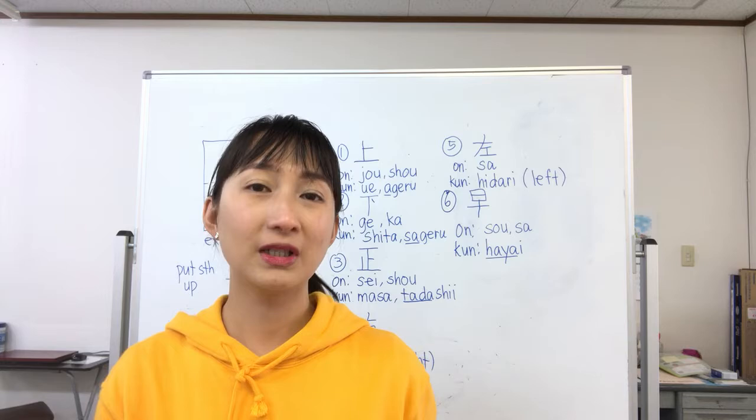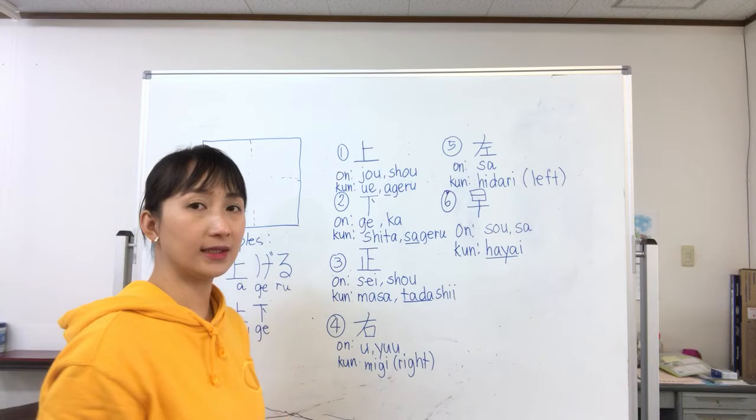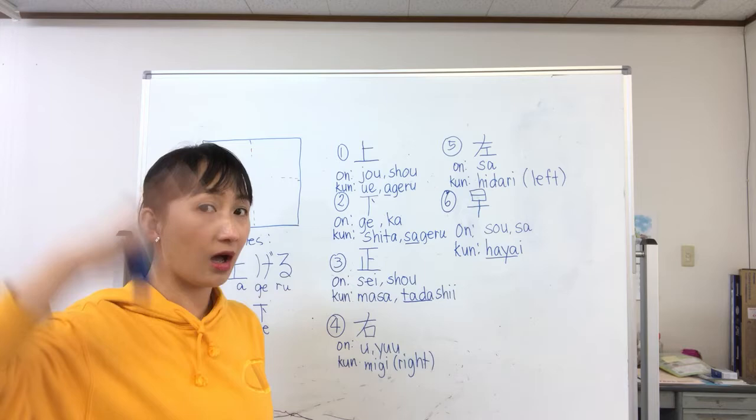Let's start off with this kanji. Its onyomi are jo and shou, and its kunyomi are uwe and agiru. So uwe means up or above.